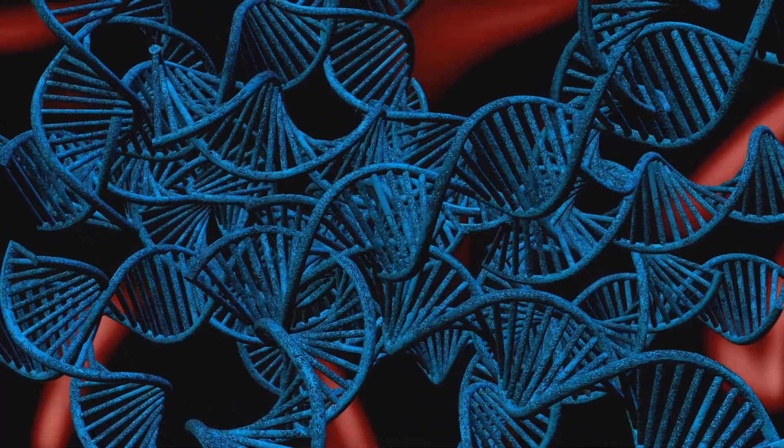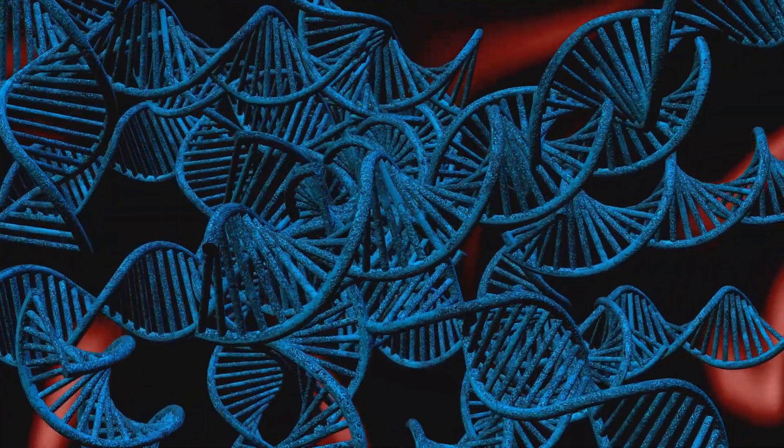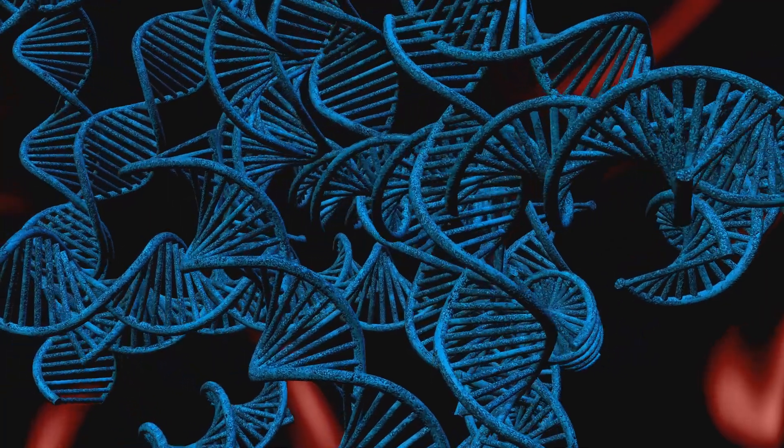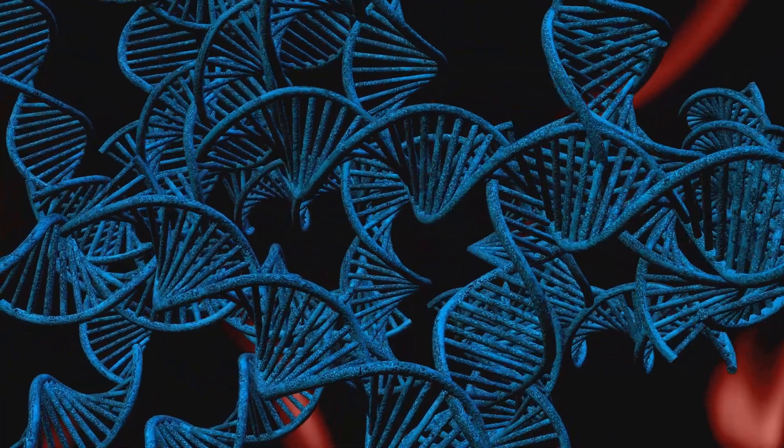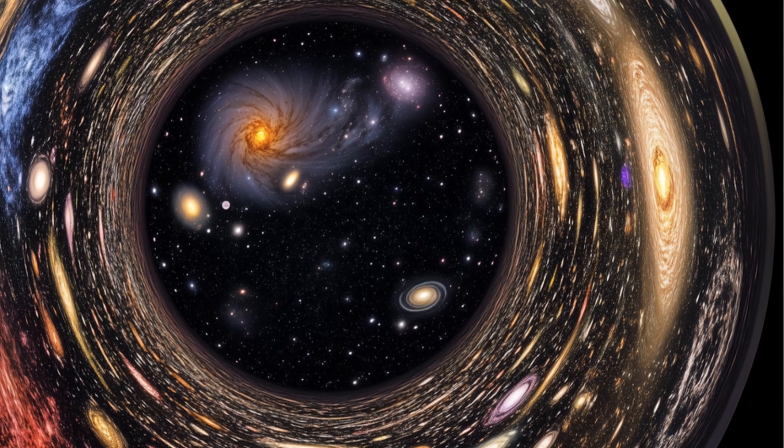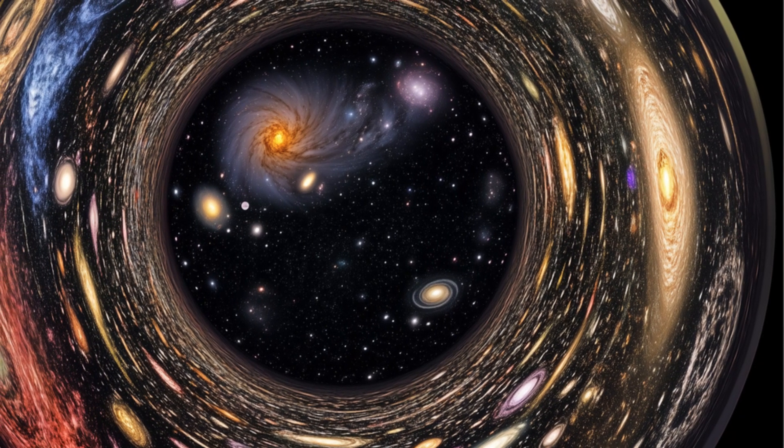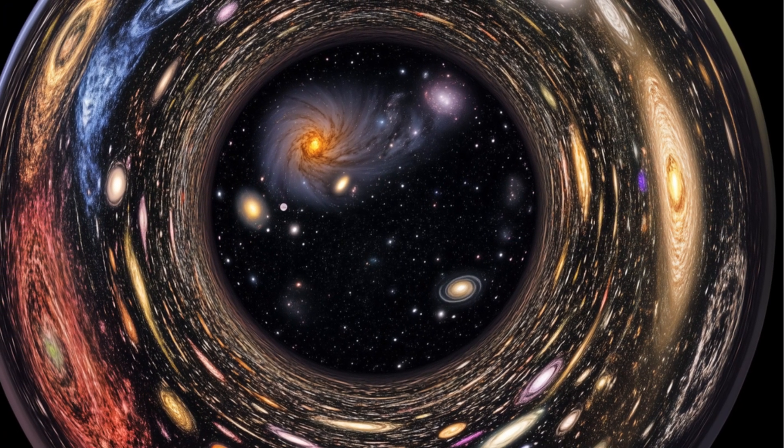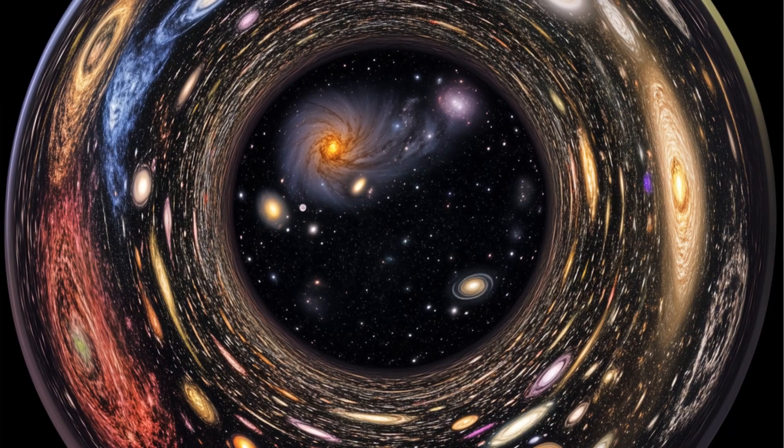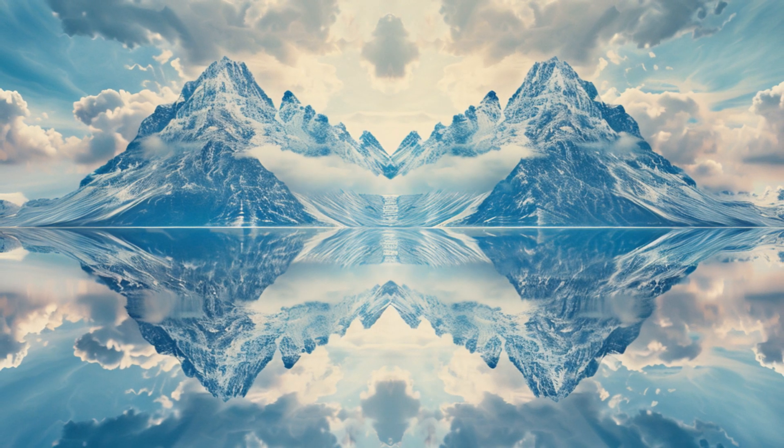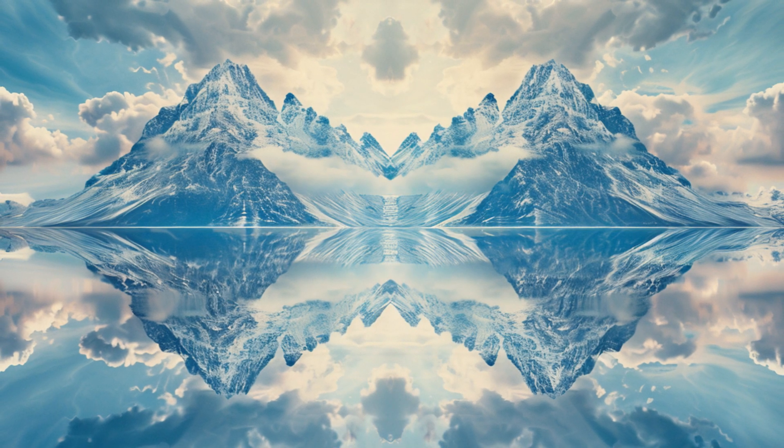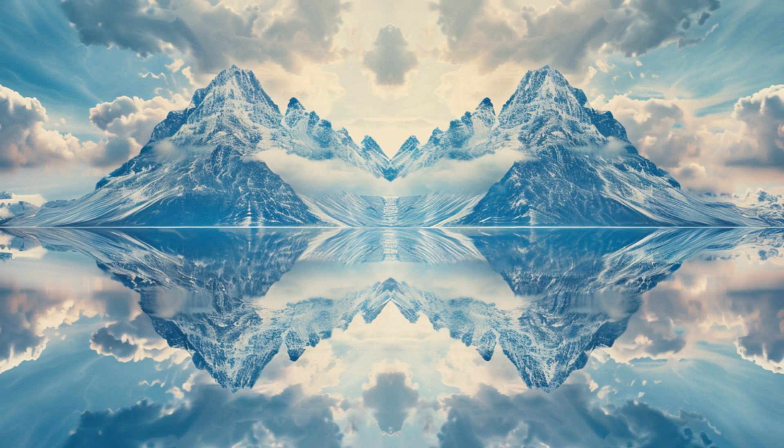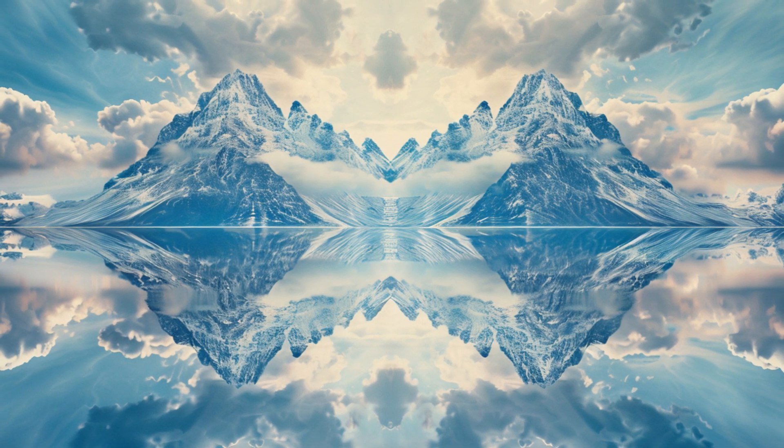One cool thing about DNA is its fractal nature. Fractals are complex patterns that are self-similar across different scales. This means that no matter how much you zoom in or out, the pattern remains consistent. This property is not just a mathematical curiosity, it has real implications for how DNA functions and is organized within the cell. Fractals are shapes that look the same, even when you zoom in or out. This self-similarity is a hallmark of many natural structures, from the branching of trees to the formation of snowflakes.